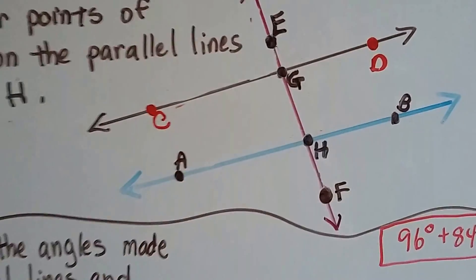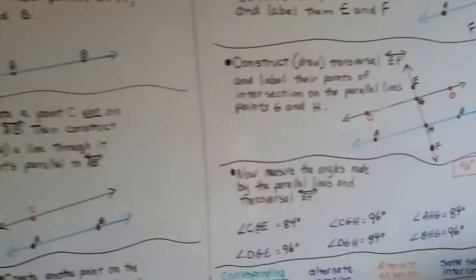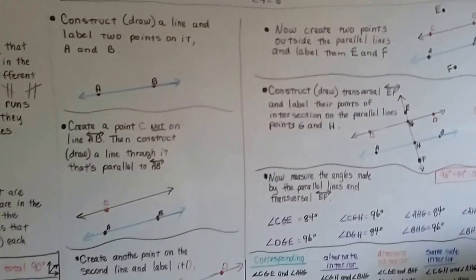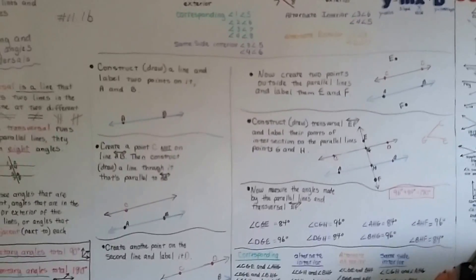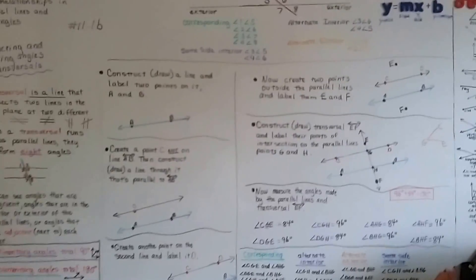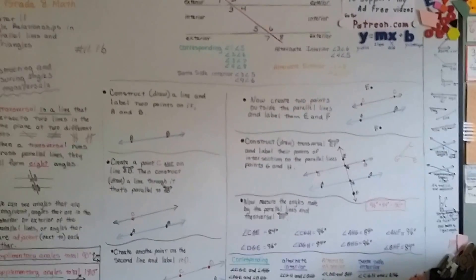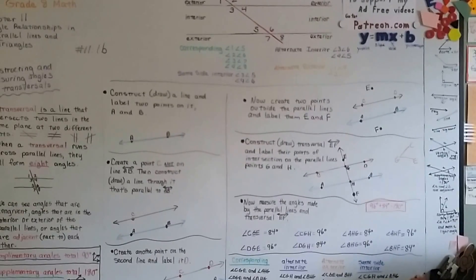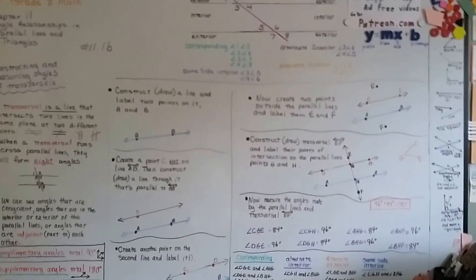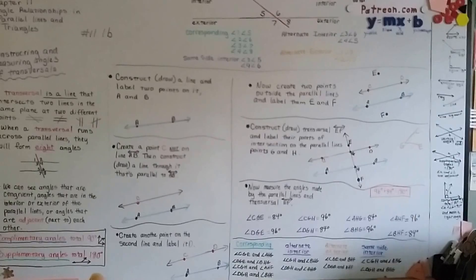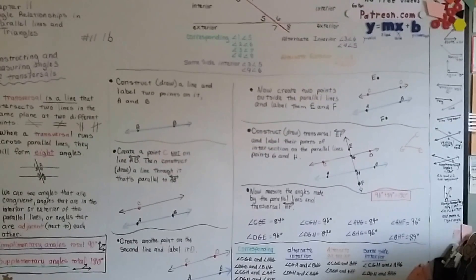So those are angle measures for transversals and constructing a transversal. We're going to talk about justifying our angle measurements in a transversal in the next video. I hope this has been helpful — it's a longer video than normal but we'll get through this throughout the chapter. Don't forget: complementary angles are 90 degrees, supplementary are 180 degrees. See you next video, bye!